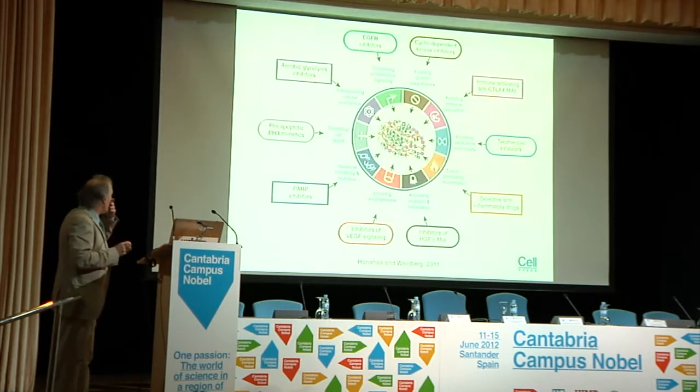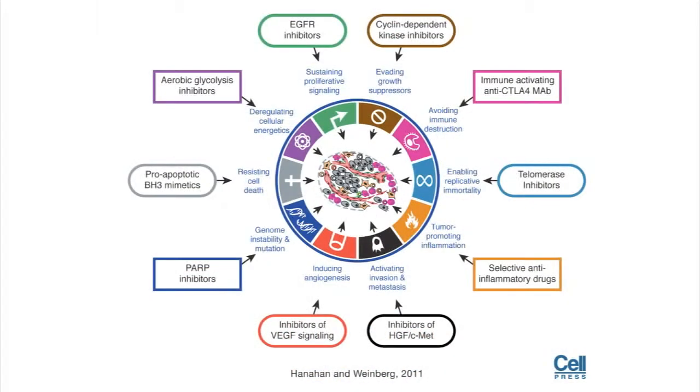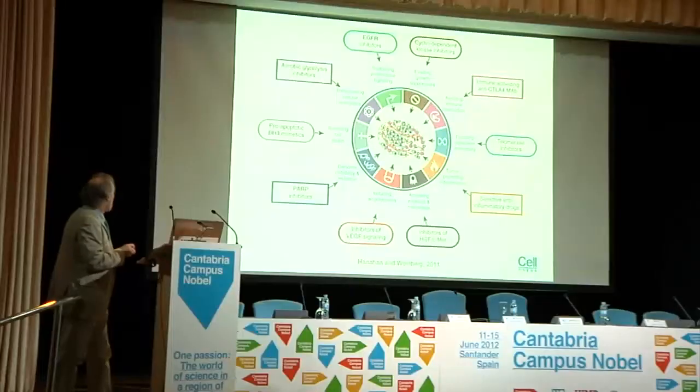Another ten years later, in 2011, an update was published on the hallmarks of cancer and the ways to interfere with these processes — whether targeting the sustained proliferative capacity of cancer cells, using selective anti-inflammatory drugs to combat inflammation-associated cancers, or activating T cells to arm them to kill the tumor. The recent data are very exciting because I think the immune system will come back to kill cancer cells.